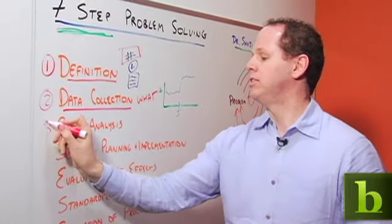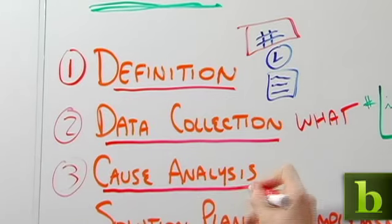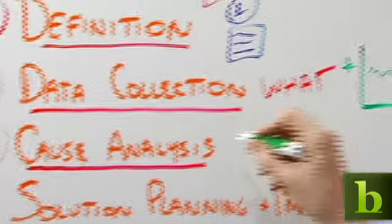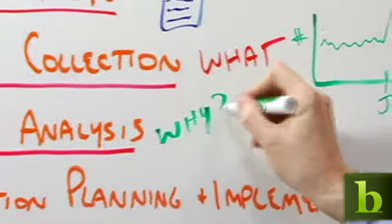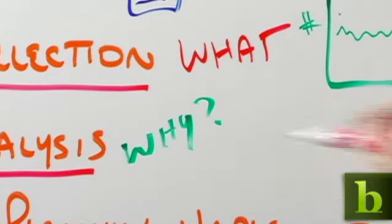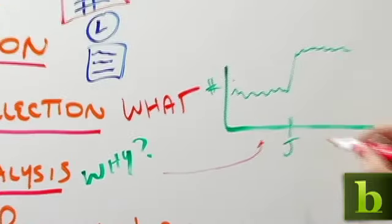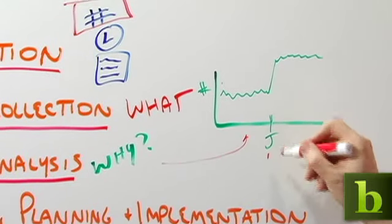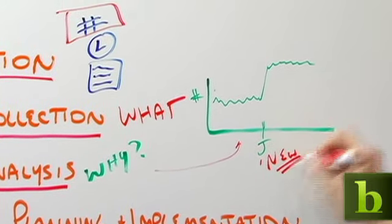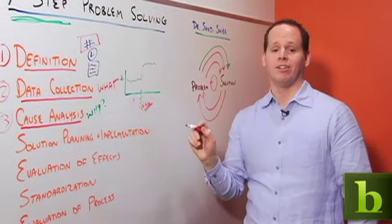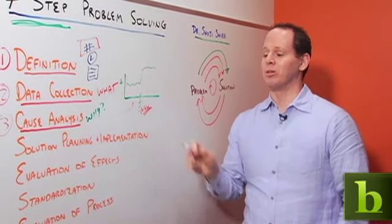Now we can move to step three. Step three is cause analysis. Cause analysis answers the question of why? What's going on here? So we might go back up to this data and we might say, you know what, it turns out right at the same time we had a new product introduced, started shipping to the customer, and a lot of the calls are about that product. Now we're getting somewhere.